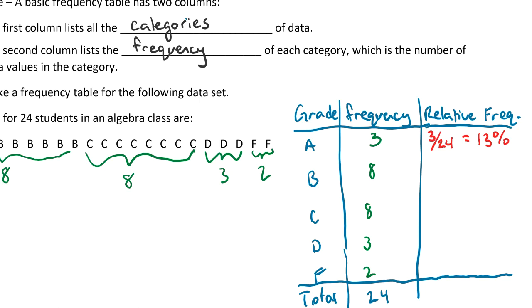Then we can do the same thing for the rest of them. So for B it would be 8 over 24 still because the total doesn't change, and so that would be 33% rounded. For C's, same exact thing, 33%. For D's it's 3 over 24 again, so 13%. And for F's it would be 2 out of 24, so 8%.